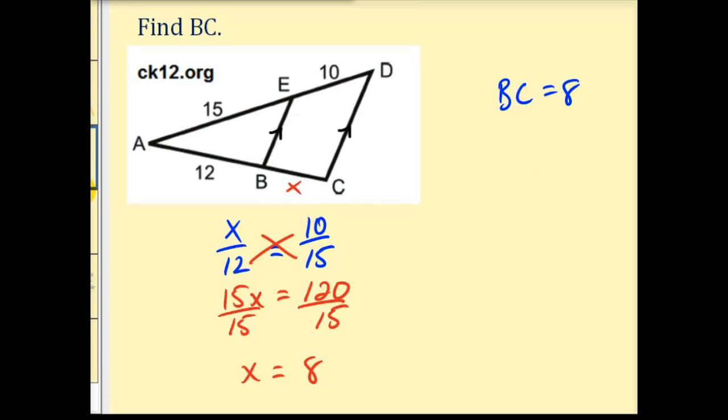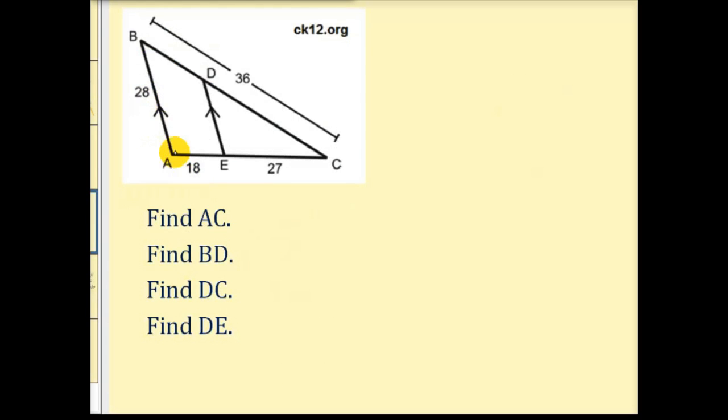Now let's go ahead and take a look at a second example that's a little bit more involved. Again here we see that segment AB is parallel to segment ED. And we're asked to find the length of AC, the length of BD, the length of DC, and the length of DE. The length of AC would be the length of this long segment here. So the length of AC would just be 18 units plus 27 units which is equal to 45 units.